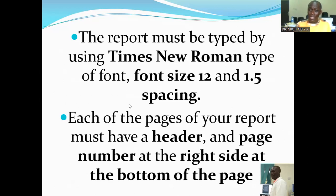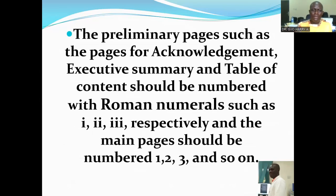The preliminary pages — such as acknowledgement, executive summary, and table of contents — should be numbered with Roman numerals (i, ii, iii, and so on), while the main pages should be numbered 1, 2, 3, and so on. Each chapter must begin with a new page and should not begin in the middle of a page.